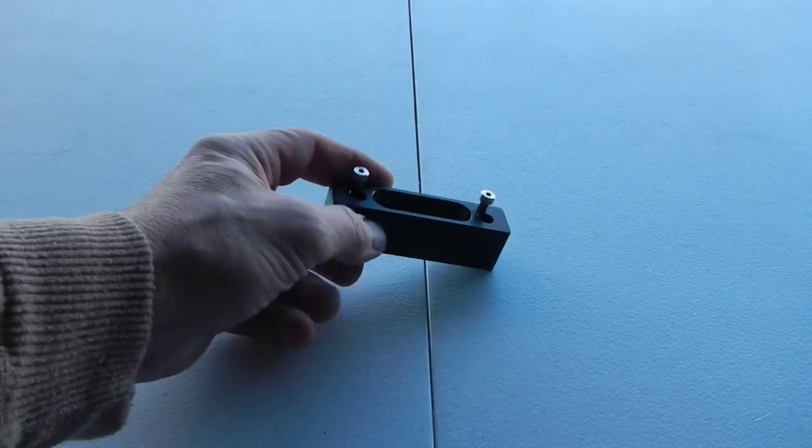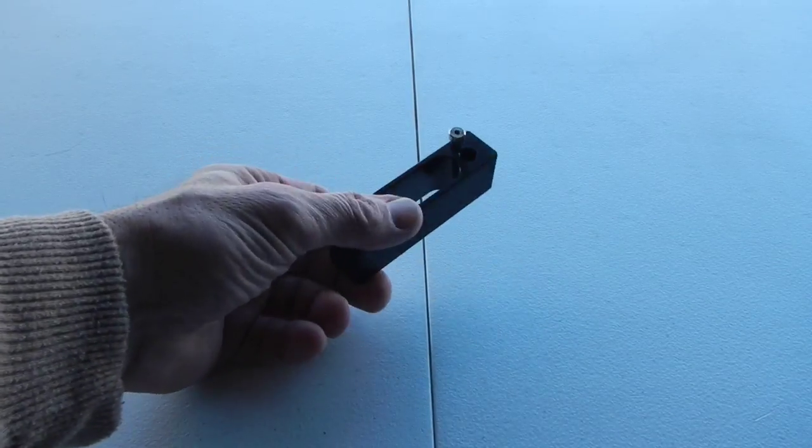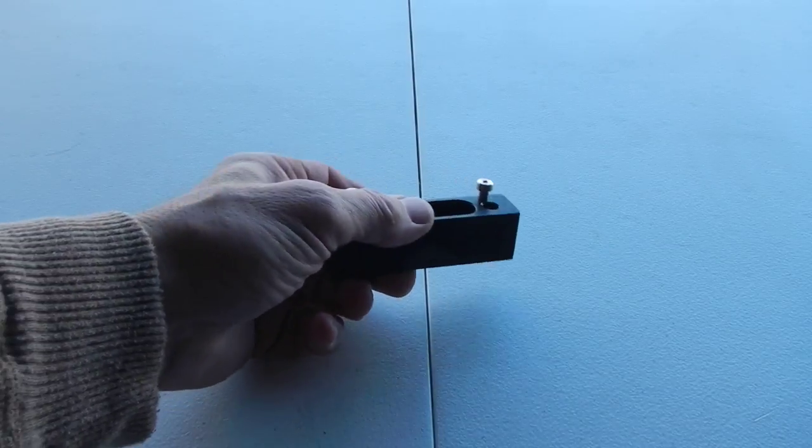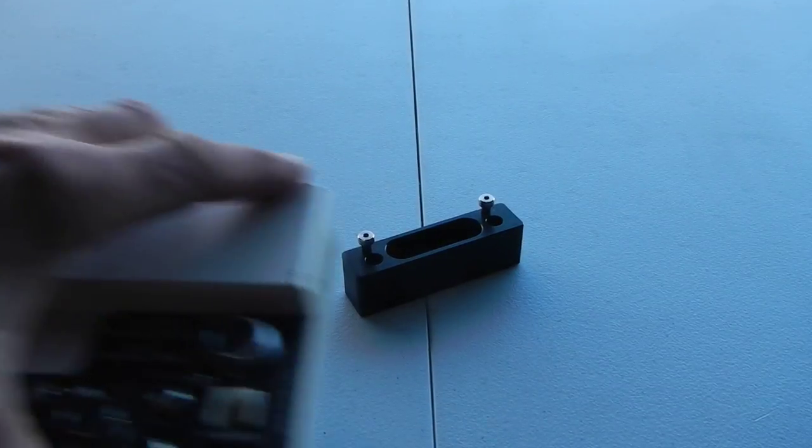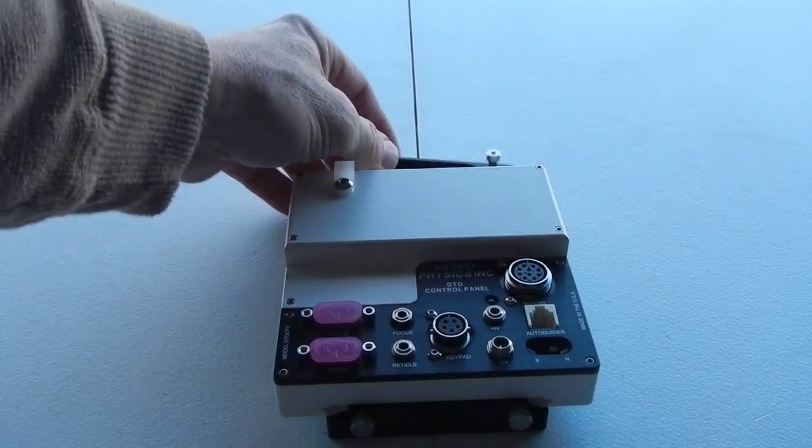Okay, on my Astrophysics 1100 mount, I used this extension to hold and bring out the CP3 control box.